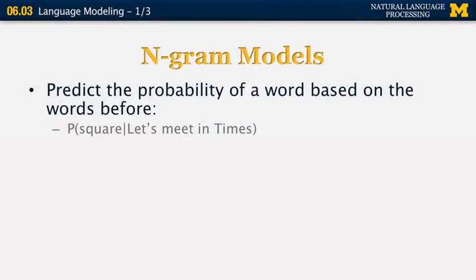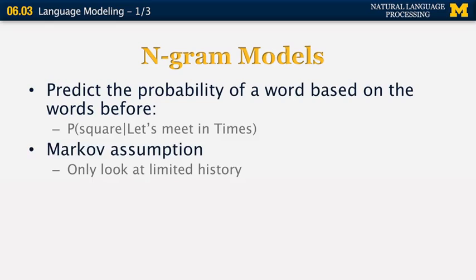Now let's look at the n-gram model. An n-gram model allows us to sacrifice some accuracy of the prediction, but in return get very good performance and deal properly with sparse training data. We're trying to predict the probability of a word based on the words before it. We use the so-called Markov assumption, which tells us that the probability of a word is not dependent on the entire history, but just on the most recent one or two words. If we look at the previous word alone, we have a bigram model; if we look at the two previous words, we have a trigram model.